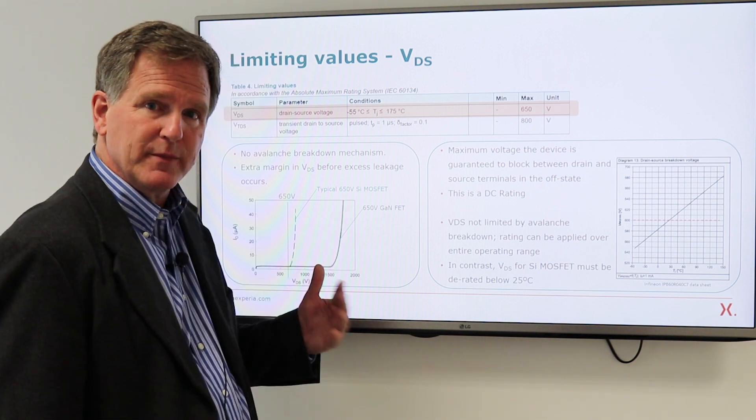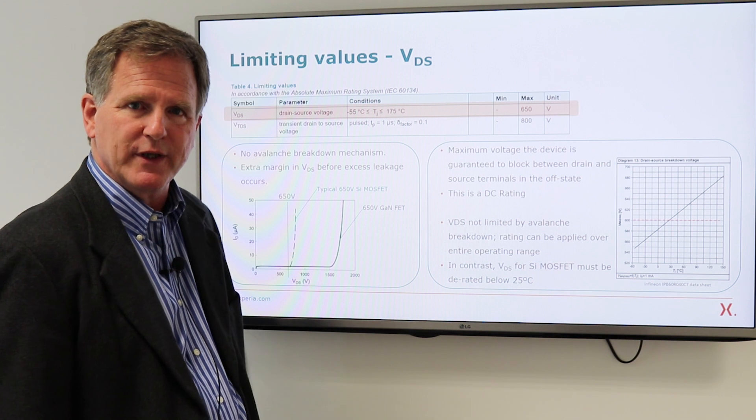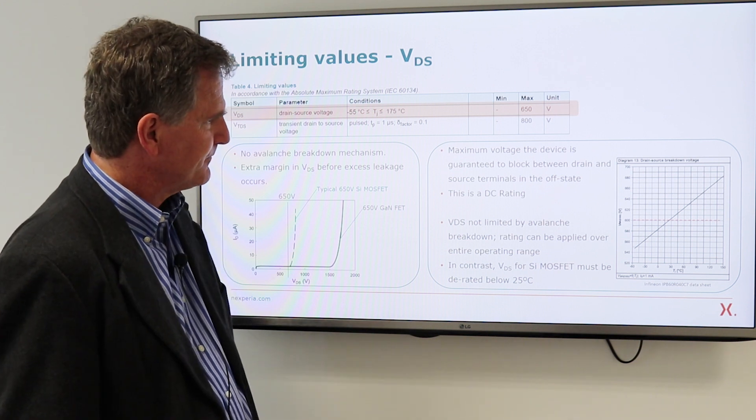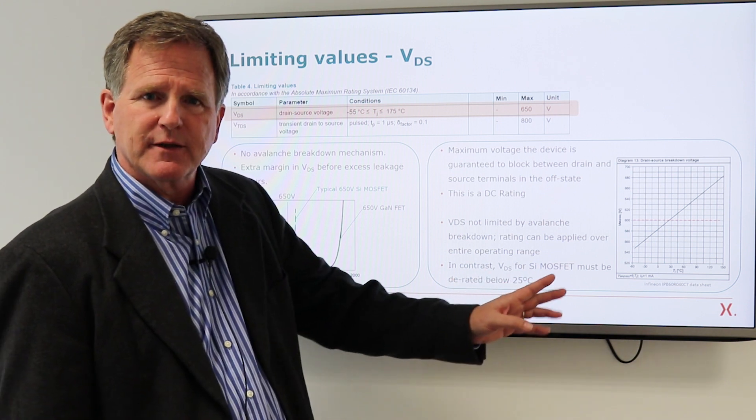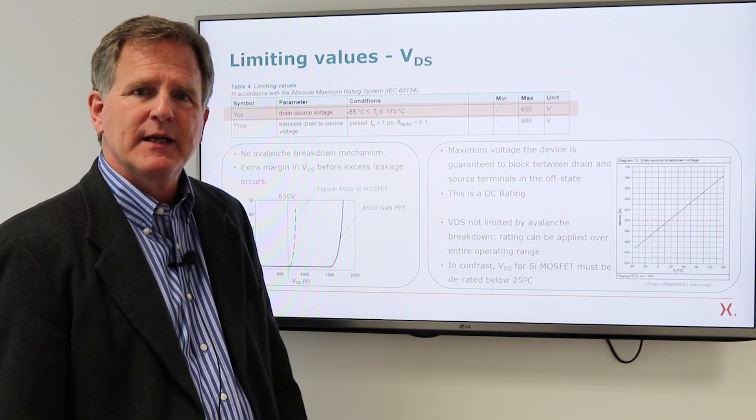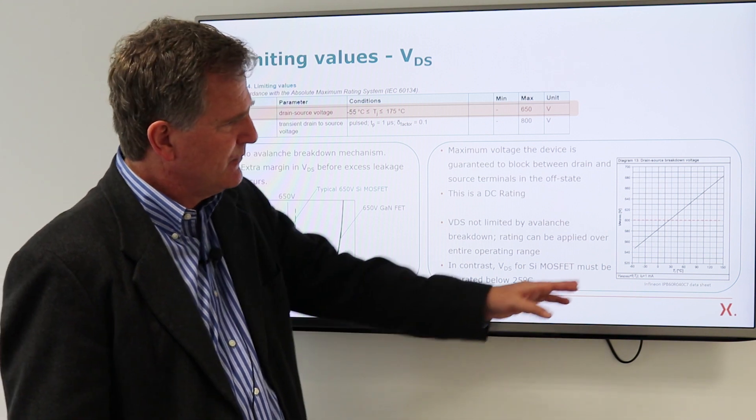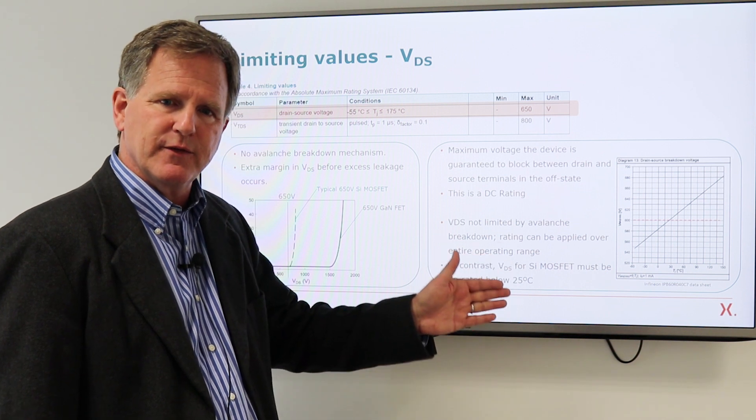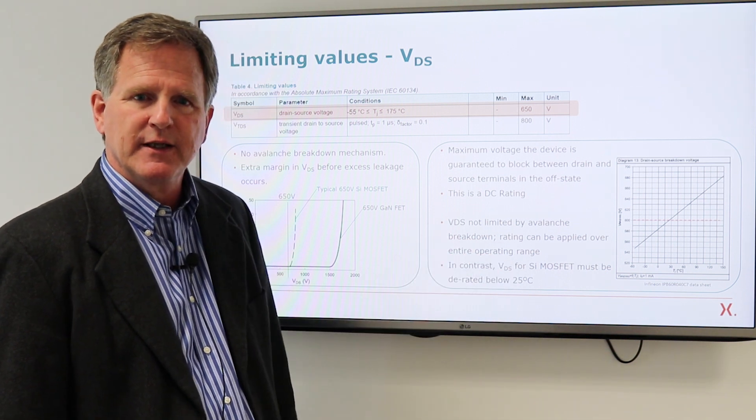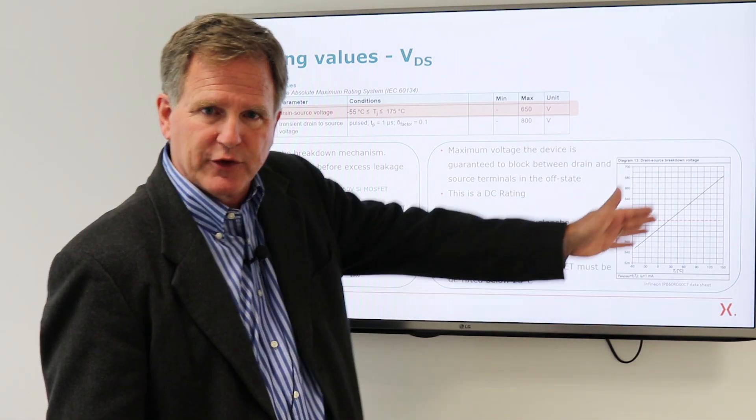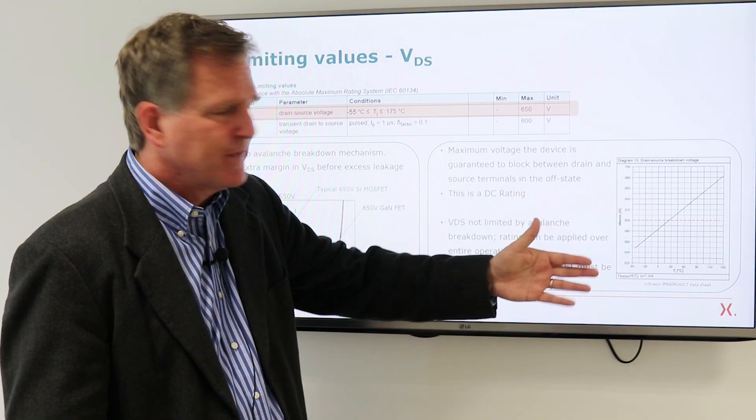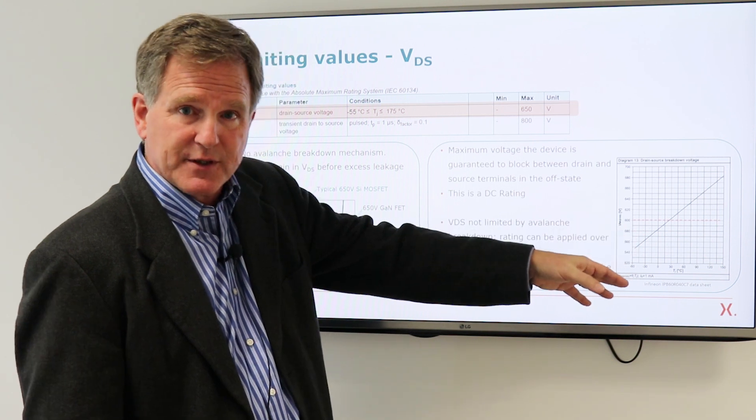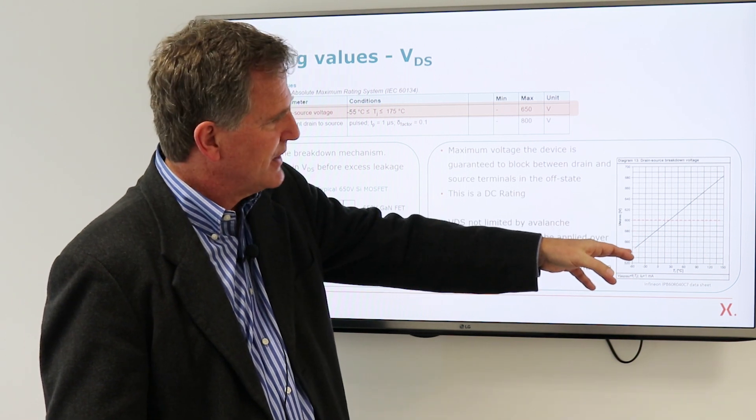But we give a lot of headroom to make it easy for you to avoid going to that voltage level. One other aspect, the avalanche mechanism has a temperature coefficient. And the convention is that below 25 degrees C, you de-rate the VDS rating. And this is a typical data sheet shows you this graph and this is just the convention acknowledging the physics of avalanche breakdown.